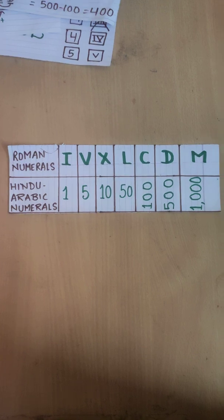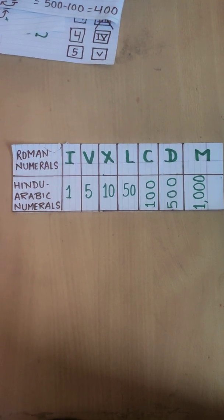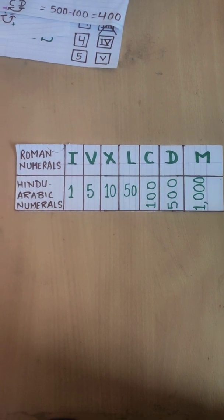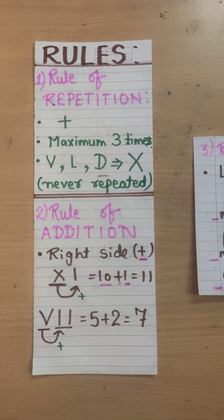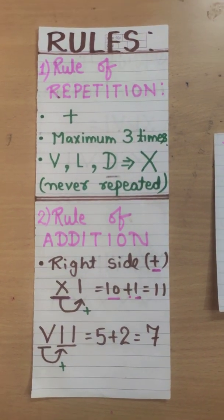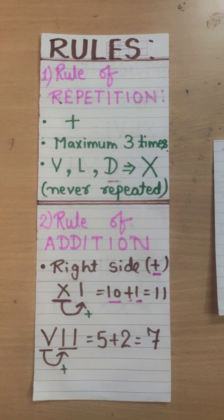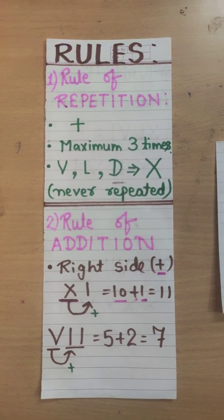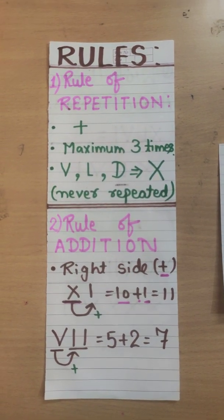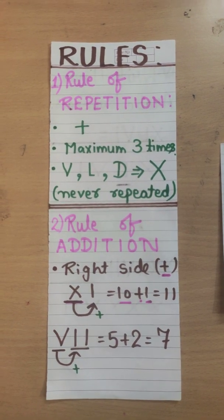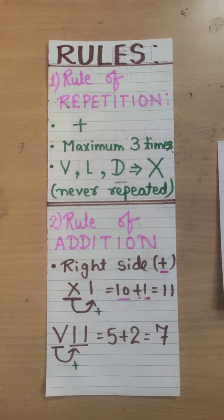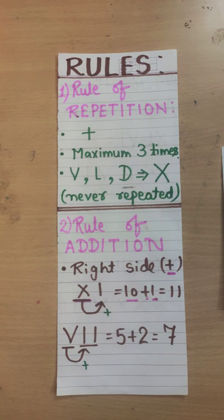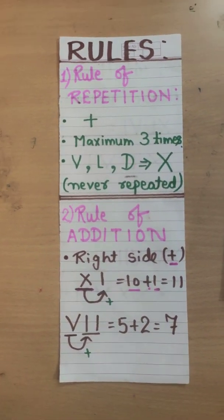Let's move on to rules which are also required for writing different numbers in Roman numerals form. Here's our rules. The first rule is rule of repetition. Repetition means to add. If any symbol is repeated 2 times, 3 times, it means we are adding it. Like 2 times I means I plus I. It means 1 plus 1 equals to 2. If 3 times I is there, 1 plus 1 plus 1, so it is 3.